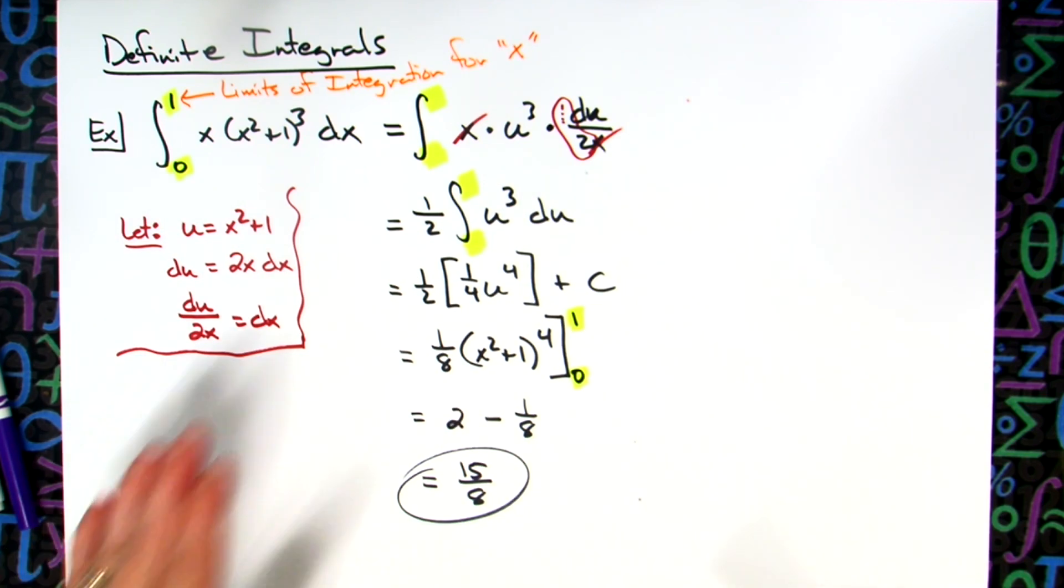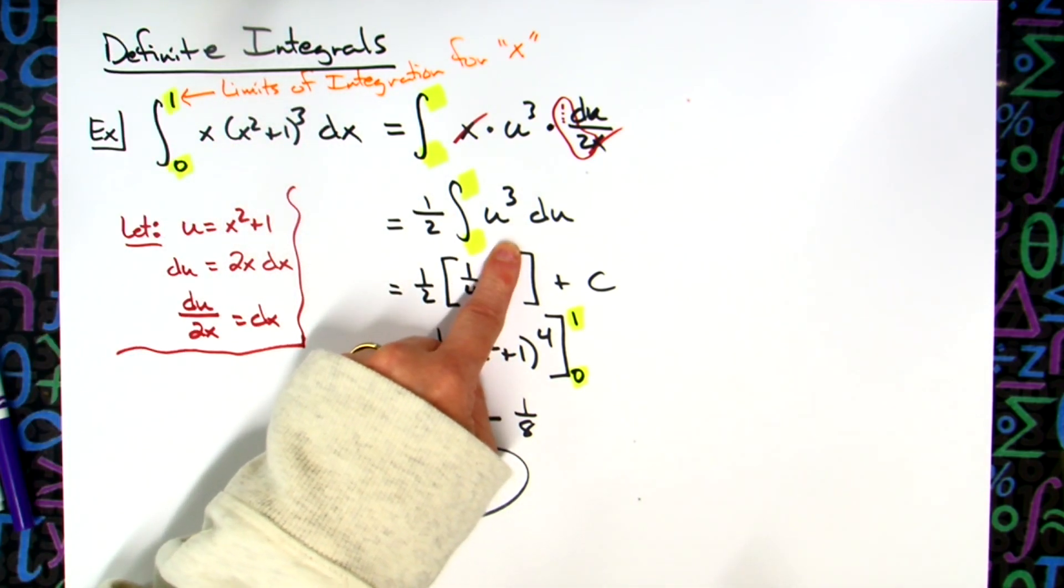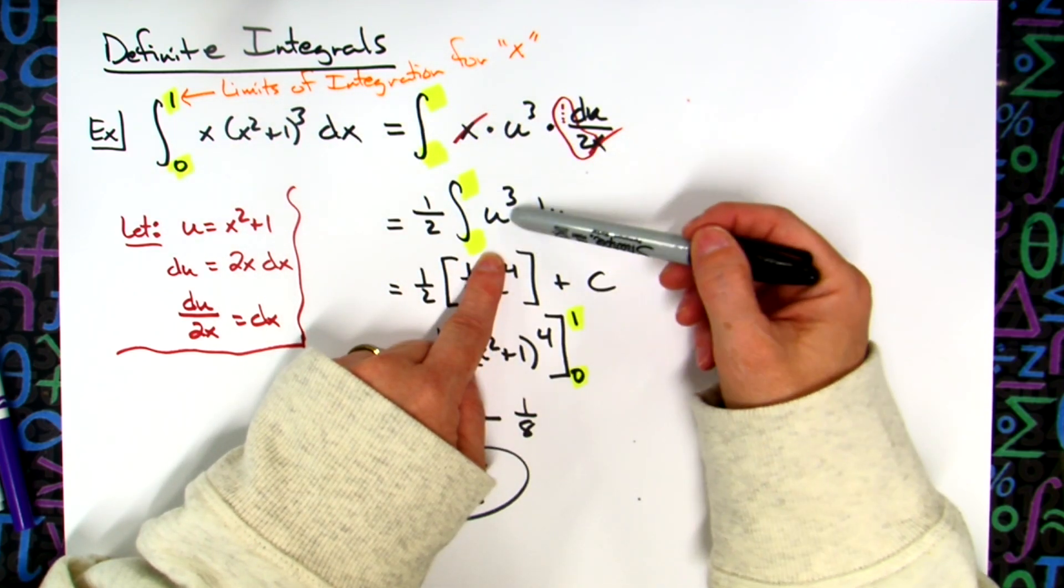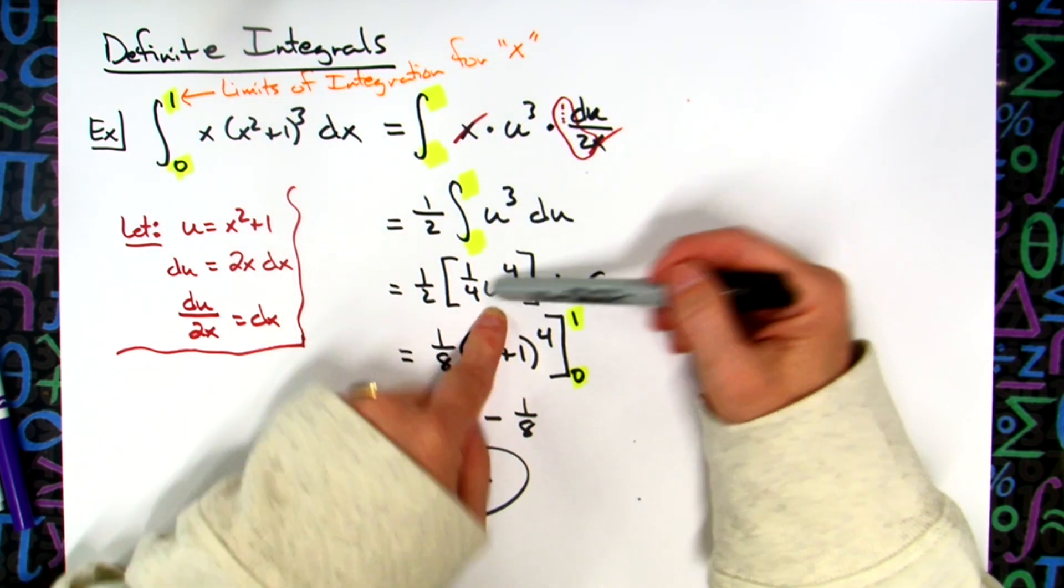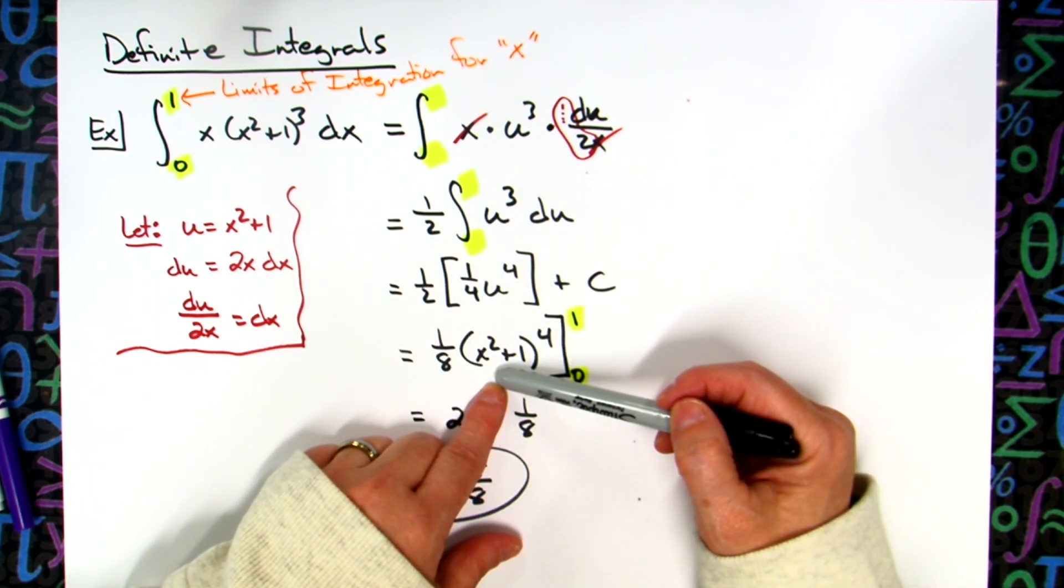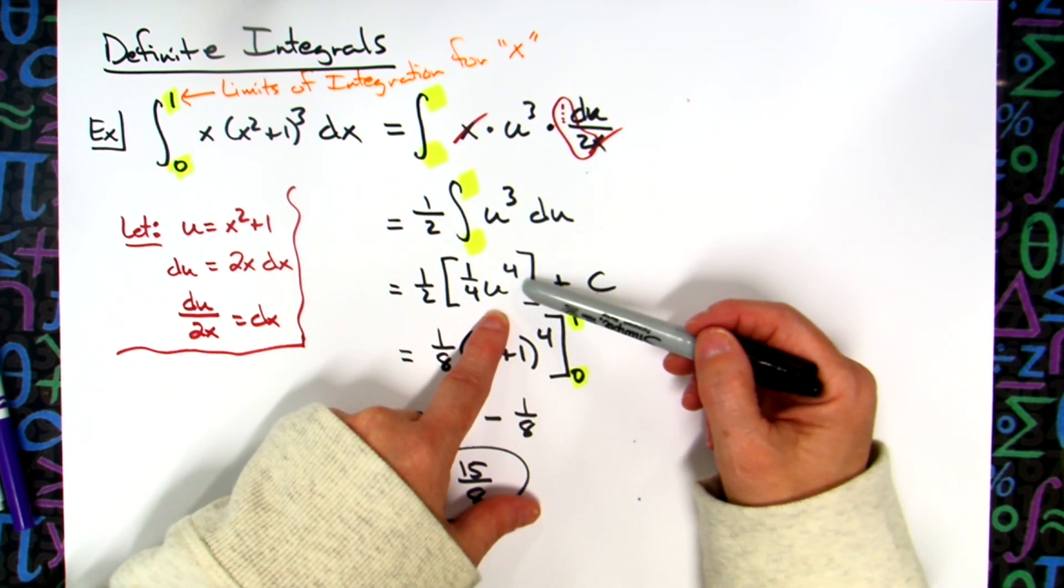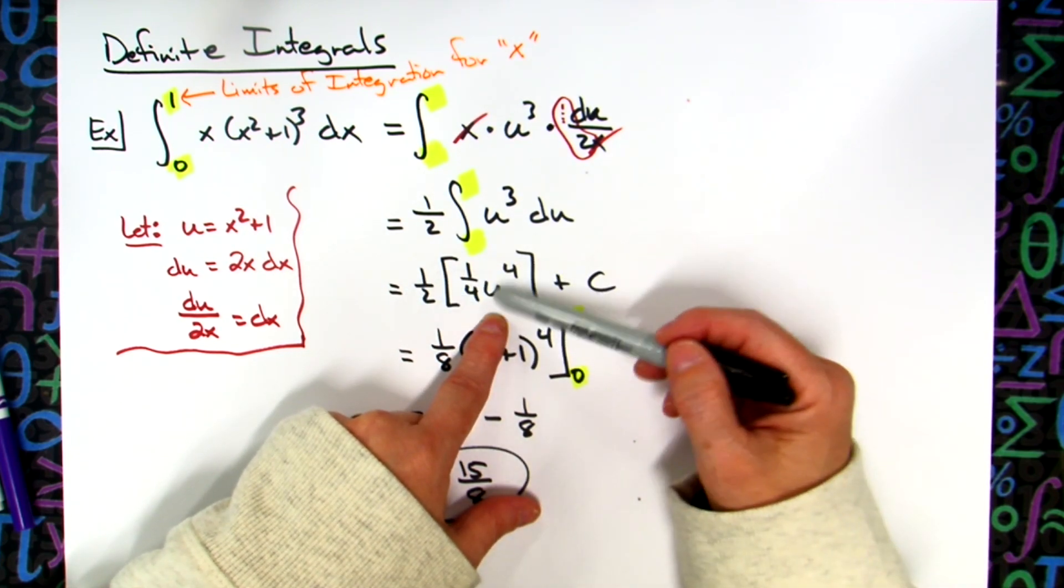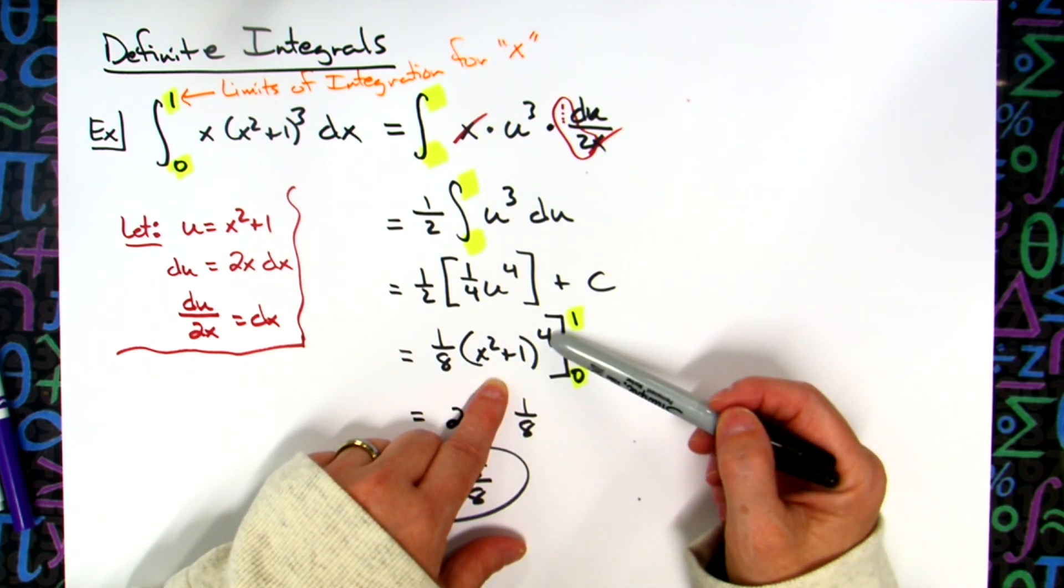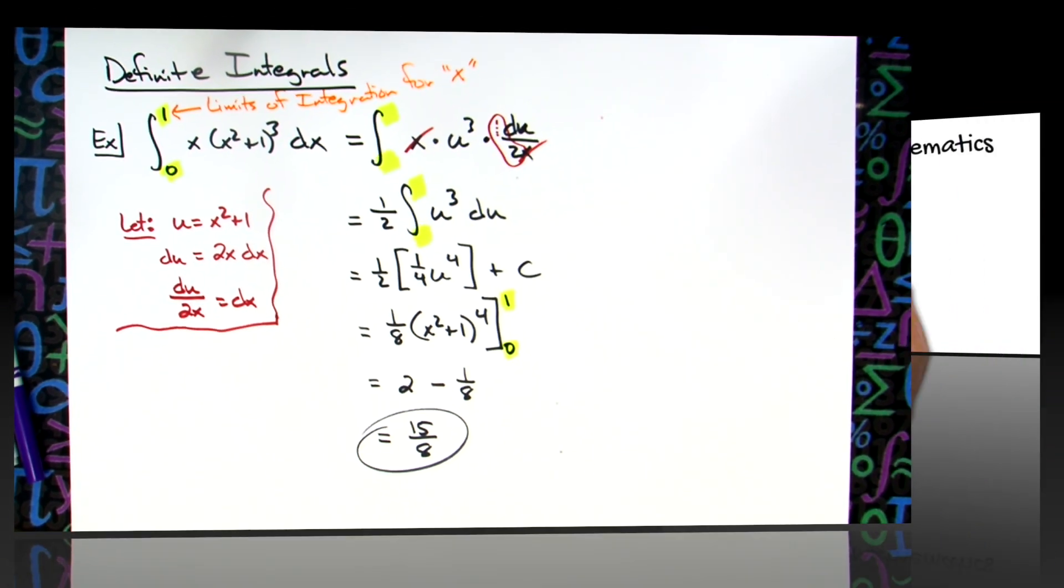Now there is some merit to changing the limits of integration to limits of integration for u. Because if I change these two numbers here, then as soon as I integrate, this expression is sometimes easier to evaluate than this. So it makes the work a little bit easier. It makes the arithmetic a little bit easier when you have limits of integration for u. Because isn't an 1/8 u to the fourth more simple than an x squared plus 1 to the fourth? So it will be to our advantage. But I want to practice this for a while.